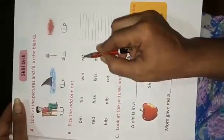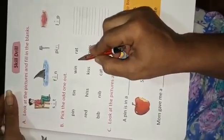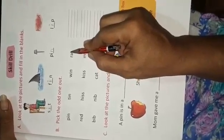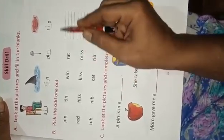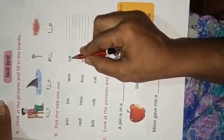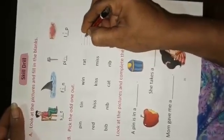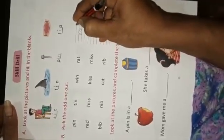But in fourth word, we have not I. We have A. A vowel. So this is the odd one. This is odd one. So we write here R-A-T, rat.